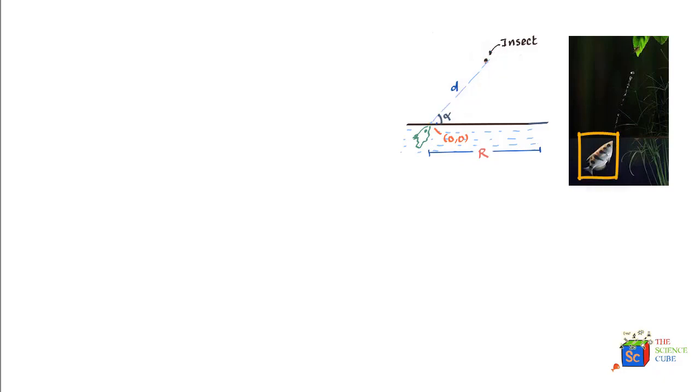And if you don't believe me, I've googled up this picture of an archer fish. Now, the situation that they've given in this problem is that there is an insect which is at a distance d from the fish.